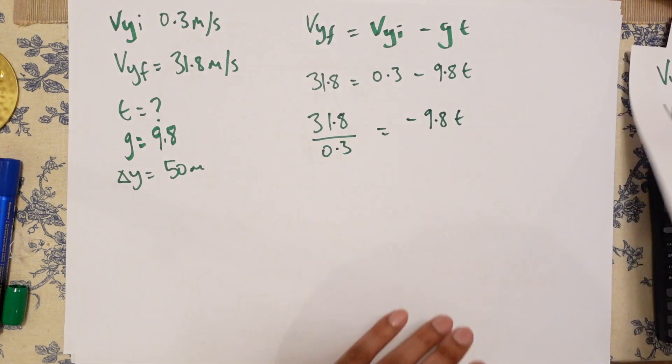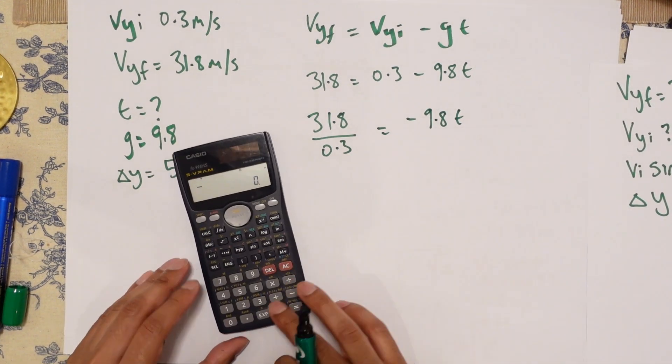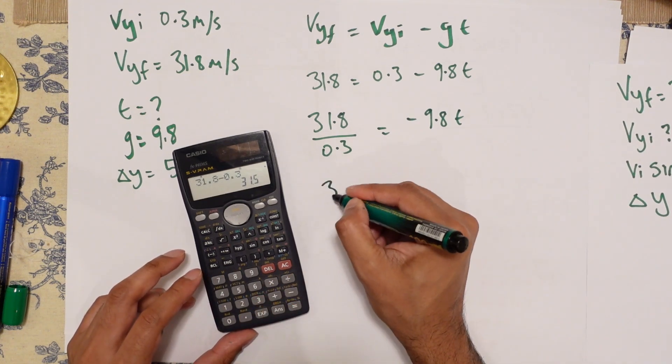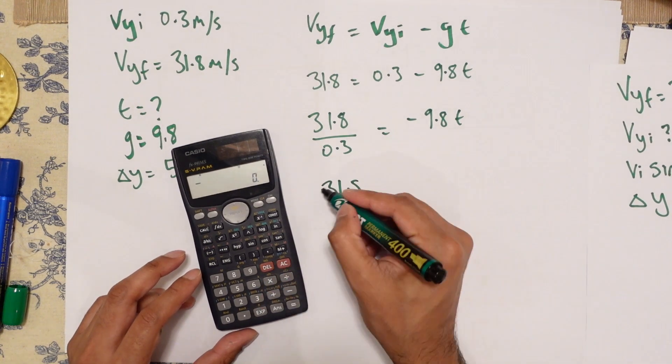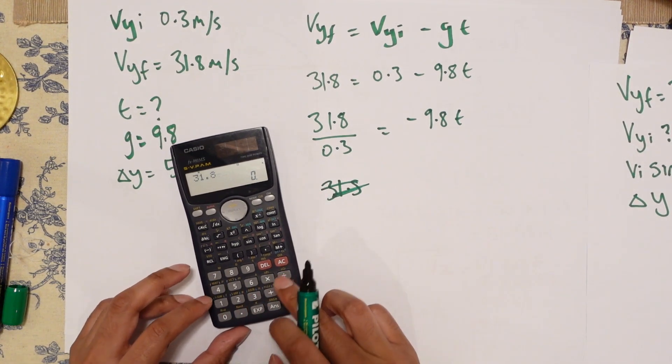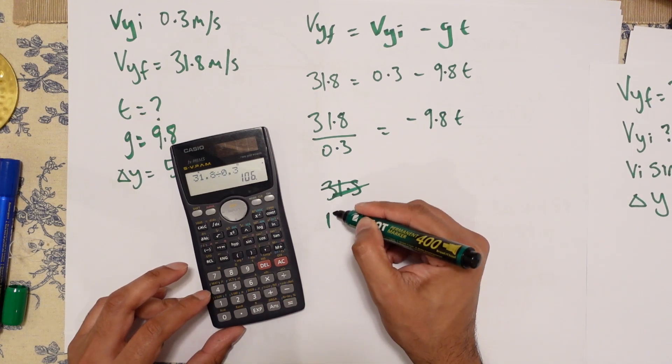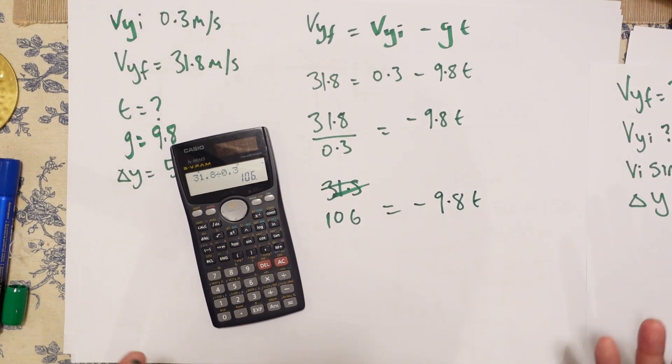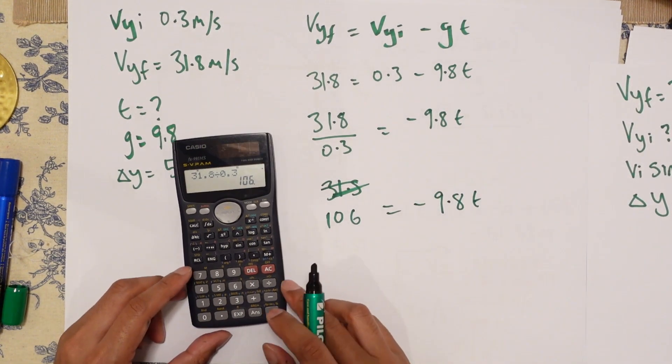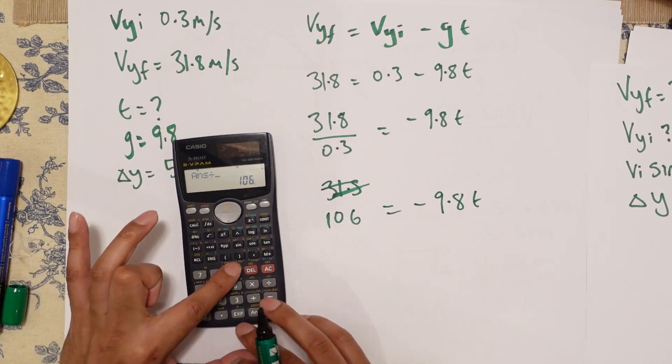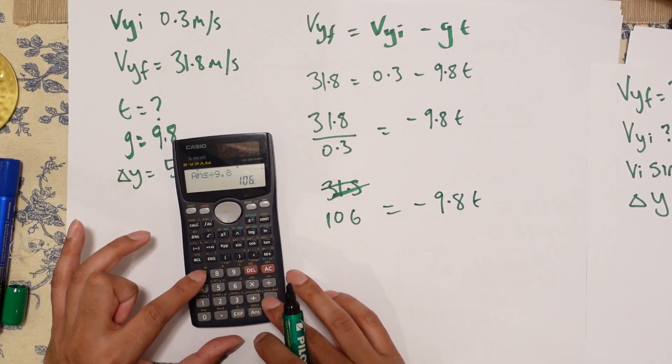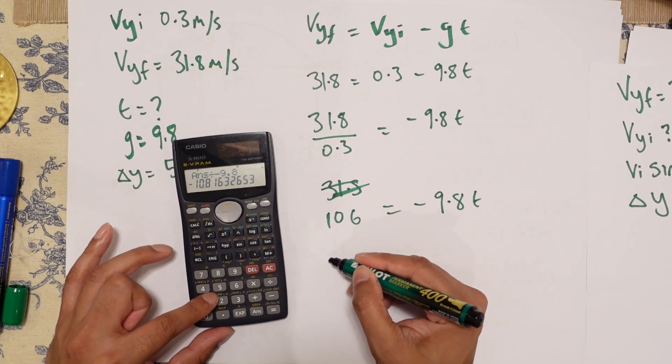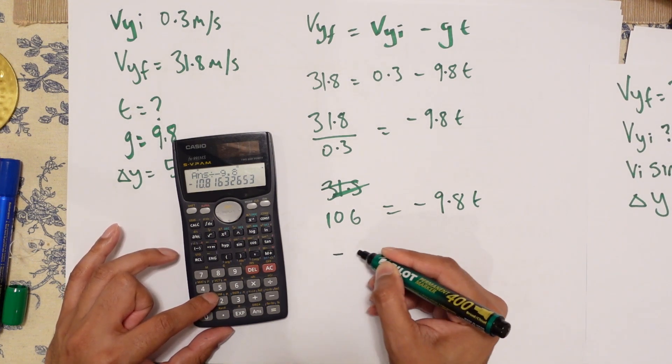So 31.8 divided by 0.3 is 106 is equal to minus 9.8 T. Divide both sides by minus 9.8.